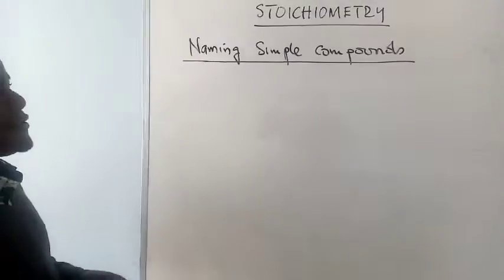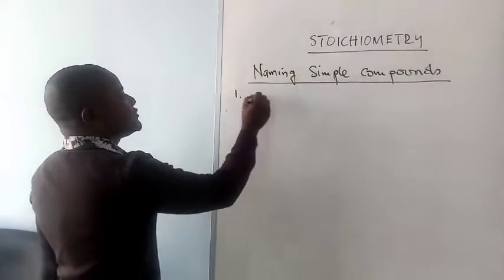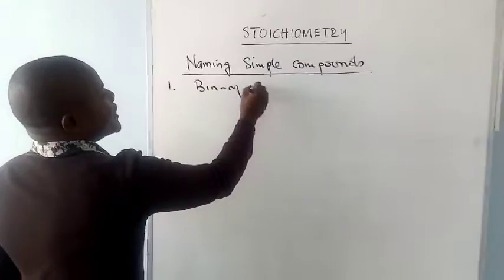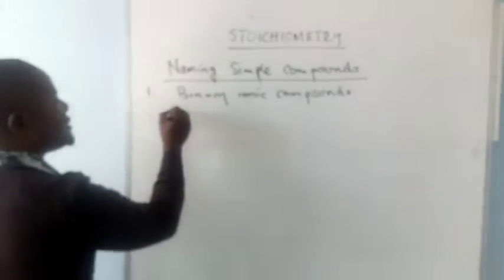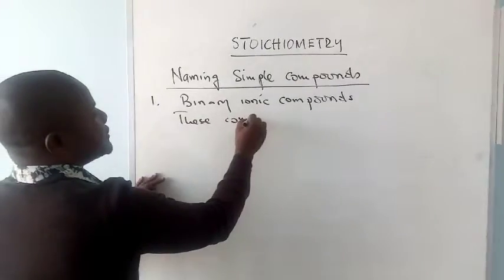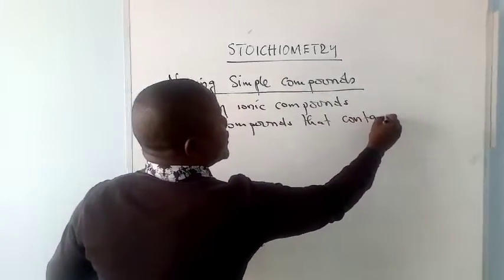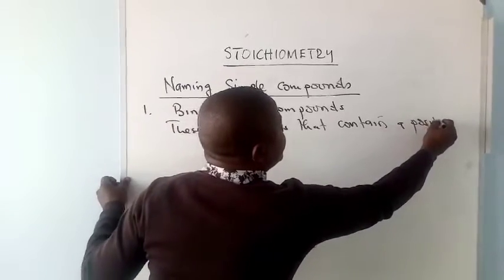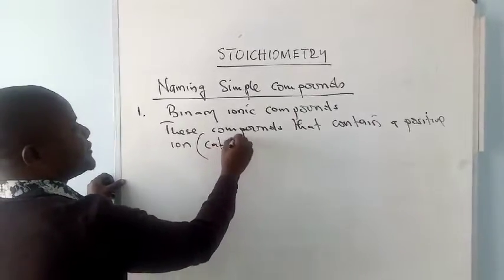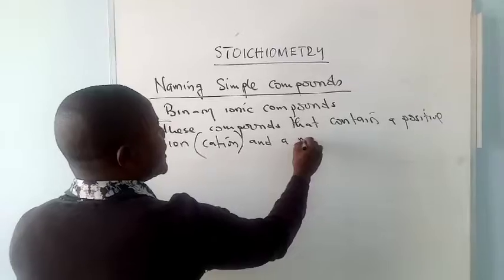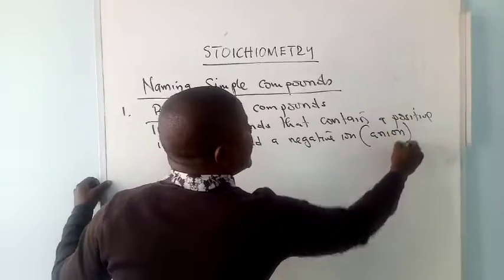In this tutorial we shall look at naming simple compounds. We will start with binary ionic compounds, which are compounds that contain a positive ion, also known as a cation, and a negative ion, also known as an anion.